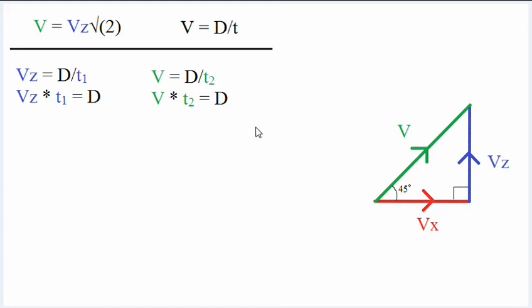So, we'll just move over the t's. And now that both equations solve for D, we can set them equal to each other like this. Then we can also replace V with Vz times the square root of 2. So we'll get this right here. And then, we can cancel out the Vz's by dividing both sides of the equation. And we get t1 equals the square root of 2 times t2.